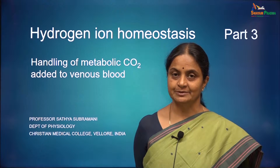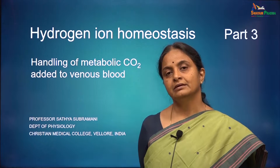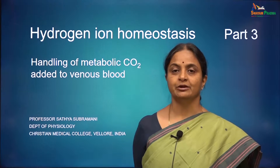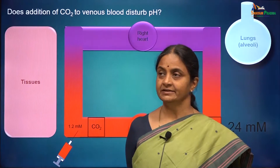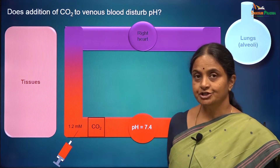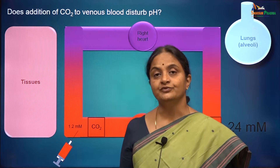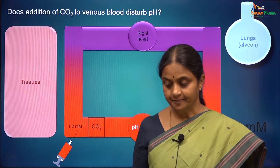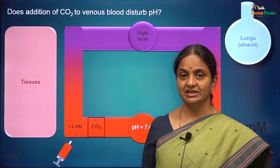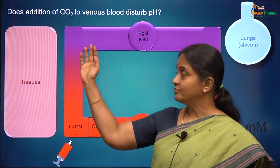Hydrogen ions in plasma remain within a very narrow range around 40 nanomoles per litre, in spite of constant addition of acid to venous blood resulting from metabolism of cells.